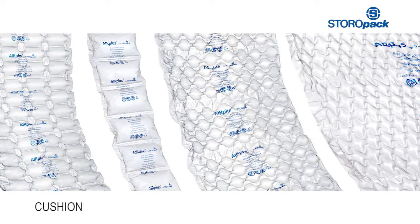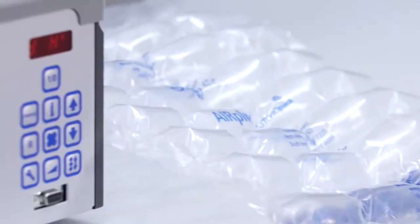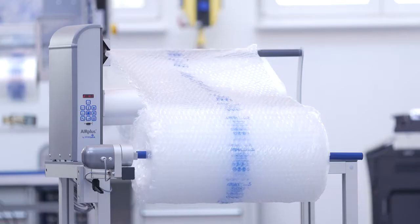Storopac offers four different types of air cushion for many different applications. These air cushions are produced with ease, directly at the packing station as required, allowing you to quickly and optimally protect your products.